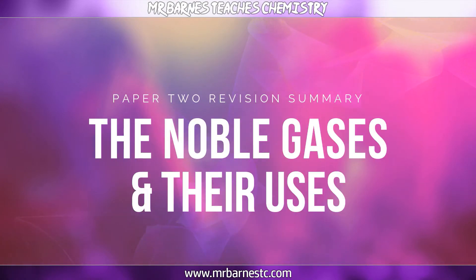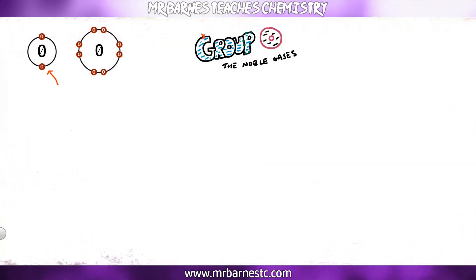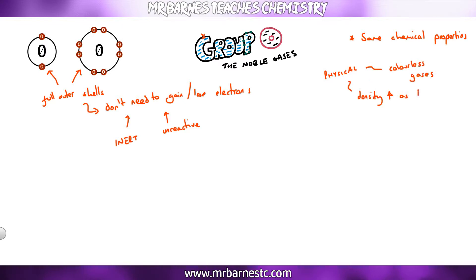The final section of this video, the noble gases. Why are they unreactive? Now the key thing about the noble gases is they have full outer shells. If they have full outer shells, it means they don't need to gain or lose electrons, which makes them inert or unreactive. So they have the same chemical properties and they have very similar physical properties in that they're all colorless gases. But one thing is really important to notice is that the density increases as you go down the group.